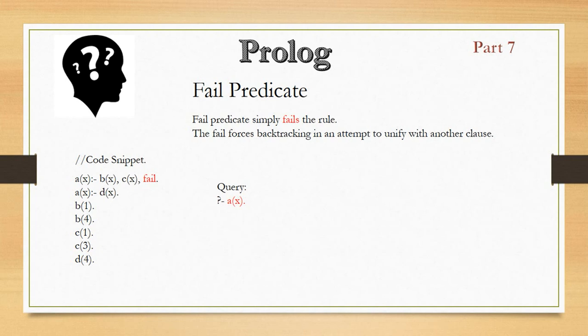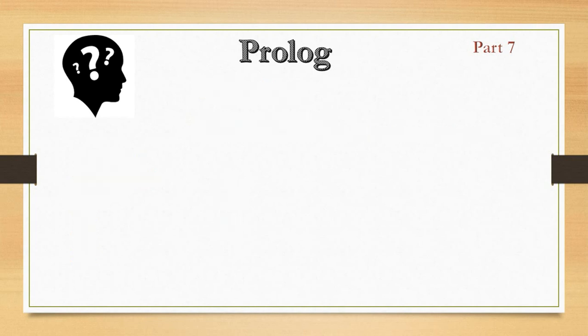So backtracking goes to the next rule for A(X), which is D(X). Whatever value X has for predicate D is the value for predicate A. Here there is only one value for X, that is 4. So the query A(X) gives X equal to 4. This is how Prolog works using a fail predicate. Now let's start with the cut predicate.